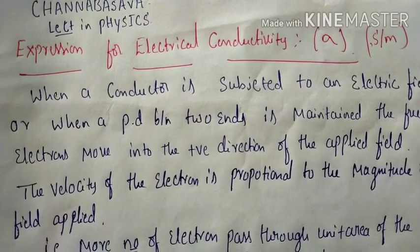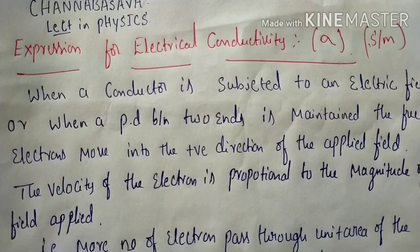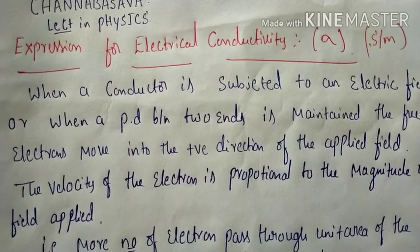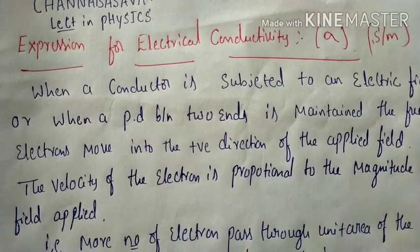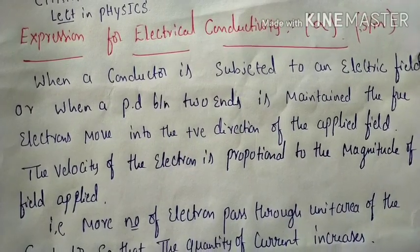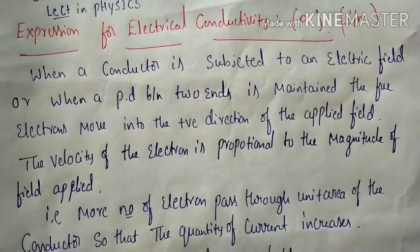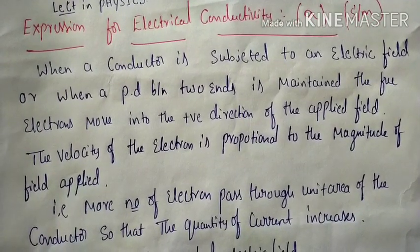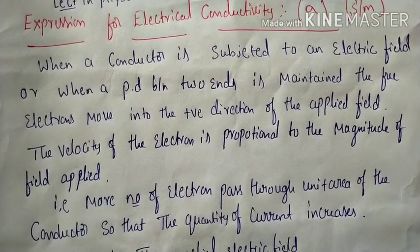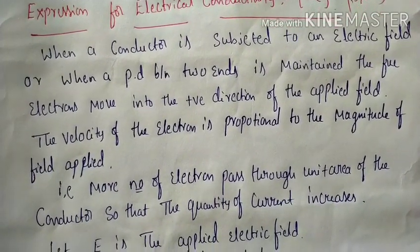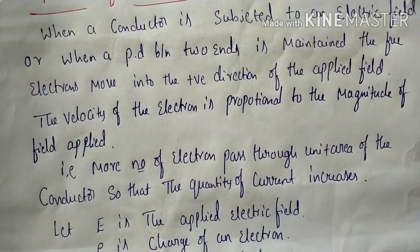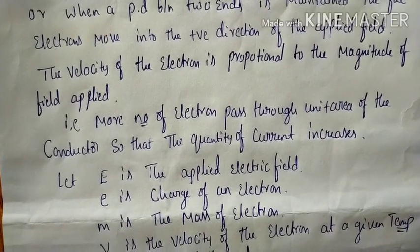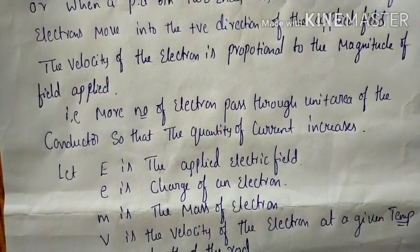Good afternoon everyone. The next topic is the expression for electric conductivity. Electric conductivity is represented by sigma, and its SI unit is siemens per meter. When a conductor is subjected to an electric field, or when a potential difference is applied across its two ends, the free electrons move in the positive direction of the applied field. The velocity of the electron is proportional to the magnitude of the applied field, so more electrons pass through the unit area, and the current increases.